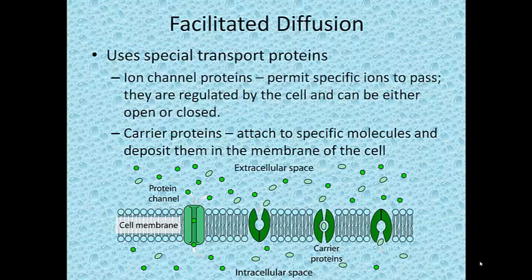The final one, facilitated diffusion, is a type of passive transport which allows substances to cross membranes with the assistance of special transport proteins. With the use of ion channel proteins and carrier proteins which are placed in the cell membrane, the substances are transported into the cell.